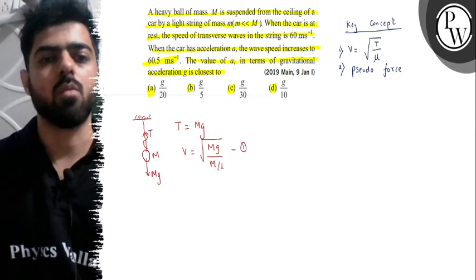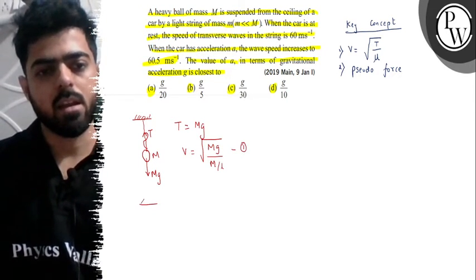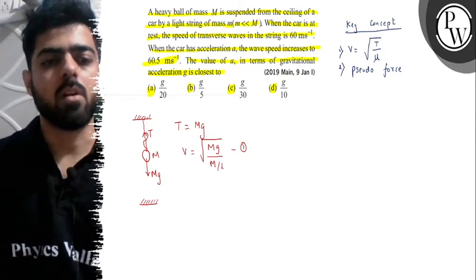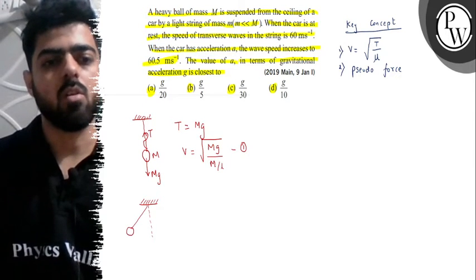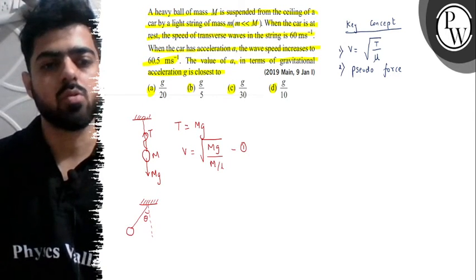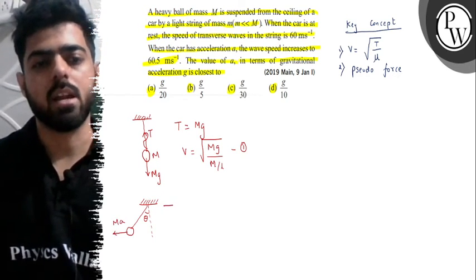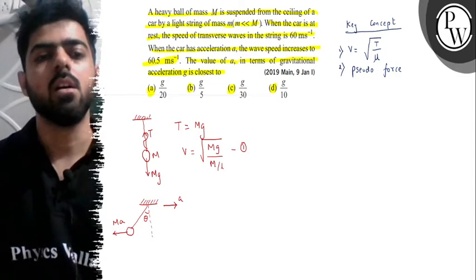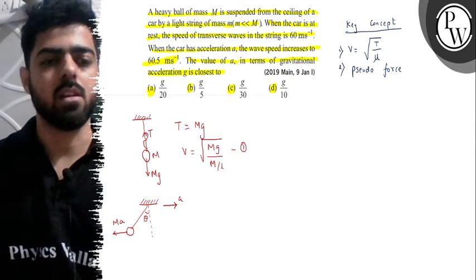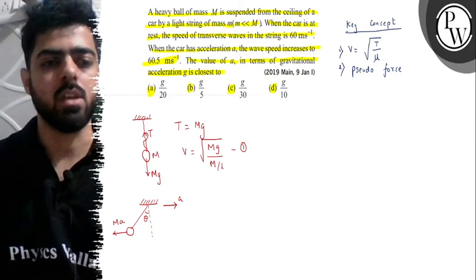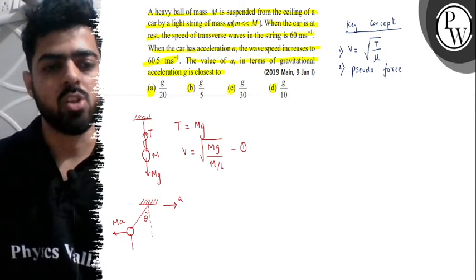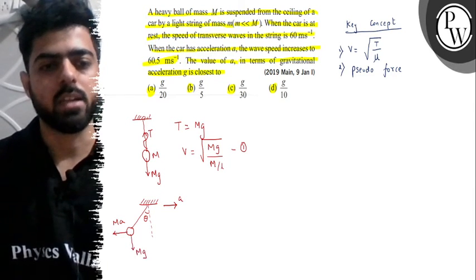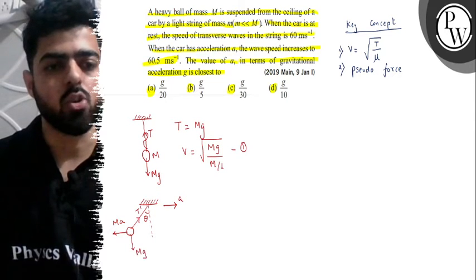In the second case, we are saying that now the car has an acceleration. So when the car accelerates, we can say the string will swing in this direction. Let's say the angle is theta. So we apply a pseudo force in the opposite direction. This is how the concept of pseudo force works. If the acceleration is in this direction of the car, we just have to reverse the direction of acceleration and apply it on the body. So this body is our capital M mass. The force will be M times A. And the weight will act downward. Tension in the string will be T-dash in this case.